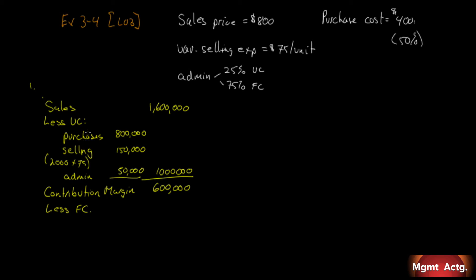Less now our fixed costs. We don't have any fixed cost of purchases because we're a merchandising firm. If we were manufacturing, we'd have fixed costs of production. Do we have any fixed costs of selling? The variable part is $75 per unit; we've expensed $150,000 of selling expense as variable cost. But when we look at the income statement, we see selling expense is $400,000.